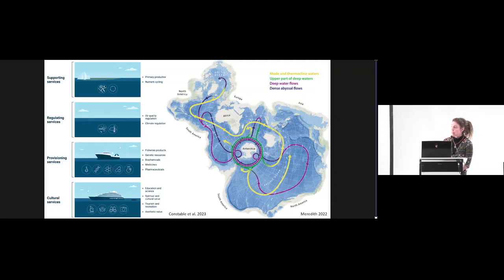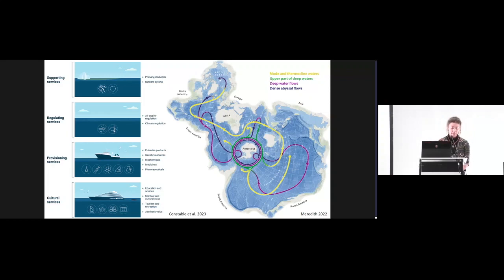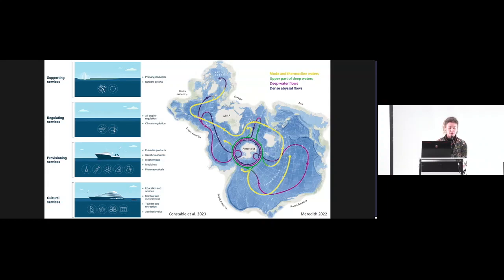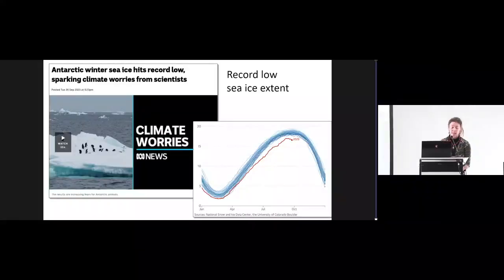In fact, the Southern Ocean has taken up around 75% of anthropogenic heat and 43% of anthropogenic carbon dioxide absorbed by the global ocean since the Industrial Revolution. The richness in nutrients of the deep ocean waters that upwell in the Southern Ocean makes the seas around Antarctica some of the most productive on the planet. And since all the nutrients aren't completely consumed by regional primary production before they head northward, the Southern Ocean also functions as a hub of new changes in Antarctic ecosystems.